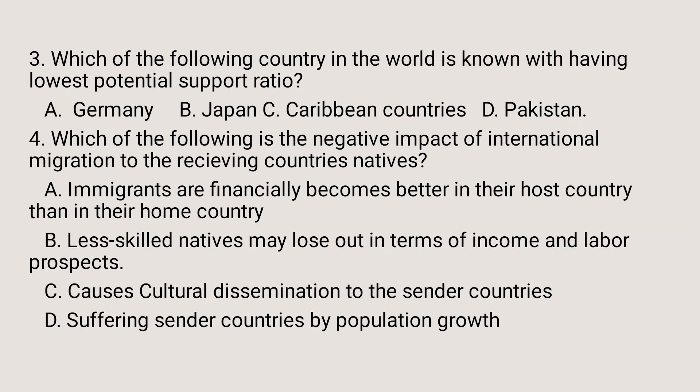Question number 3. Which of the following countries in the world is known for having the lowest potential support ratios? A. Germany. B. Japan. C. Caribbean countries. D. Pakistan. Japan is known for having the lowest potential support ratios according to the 2020 population data. So the answer is B.